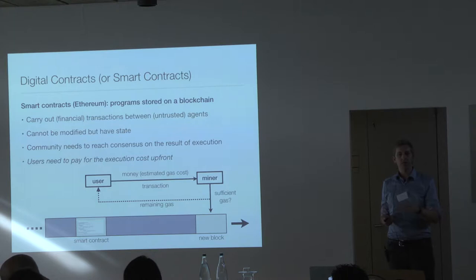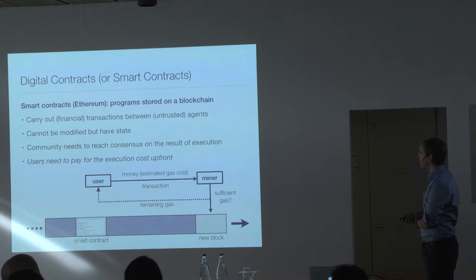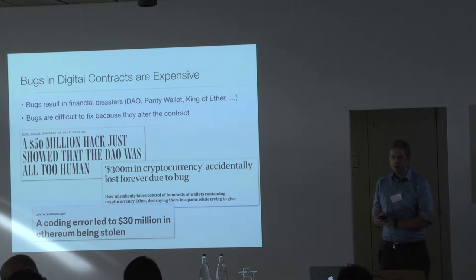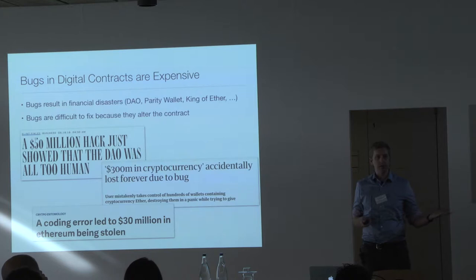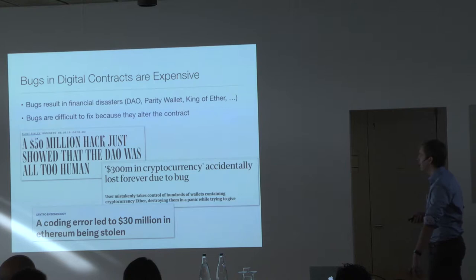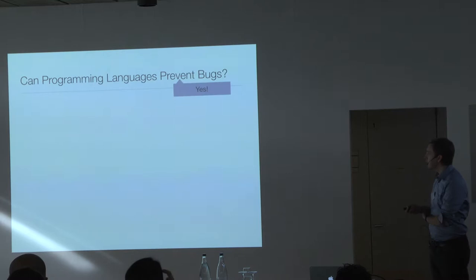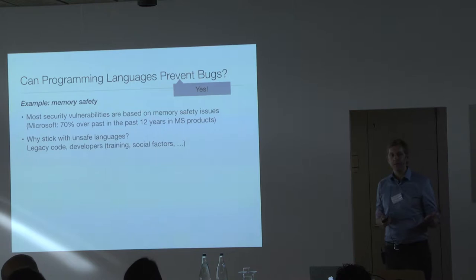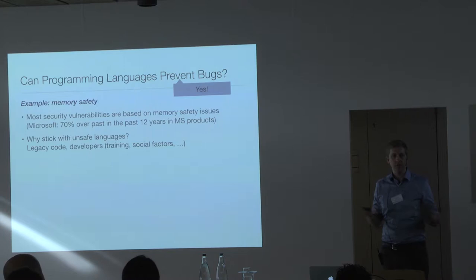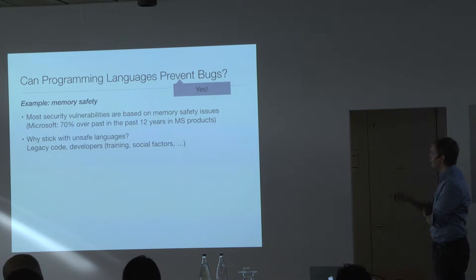What's interesting about smart contracts is that bugs in them can result in — and have resulted in — financial disasters. Also, bugs cannot be fixed after contracts are published, or at least it's very difficult. Can programming languages help prevent bugs? Yes. For example, Microsoft estimates that 70% of security vulnerabilities in their product code are caused by memory safety issues, so using a memory-safe language eliminates 70% of those. They haven't fully switched due to legacy code and developer training.